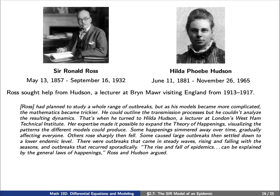Some happenings simmered away over time, gradually affecting everyone. Others rose sharply, then fell. Some caused large outbreaks, then settled down into a lower endemic level. There were outbreaks that came in steady waves, rising and falling with the seasons, and outbreaks that occurred sporadically. The rise and fall of epidemics can be explained by the general law of happenings, Ross and Hudson argued.